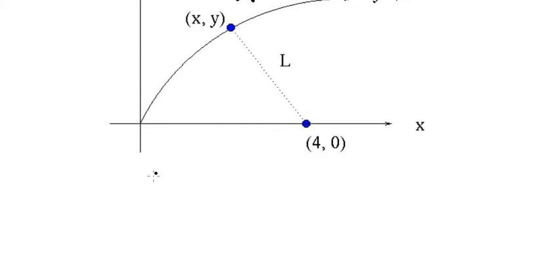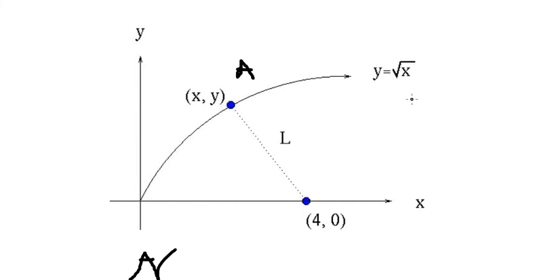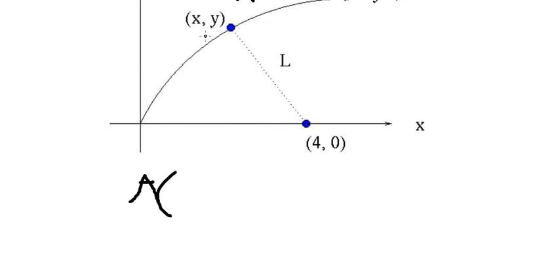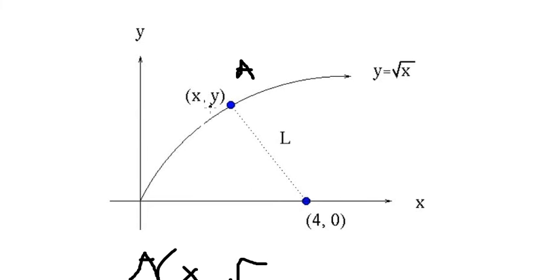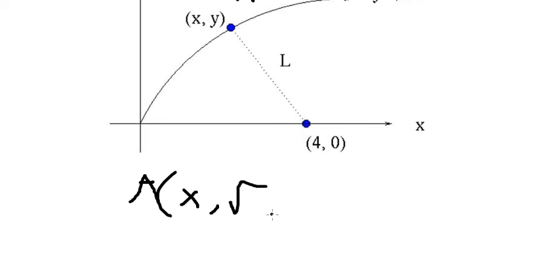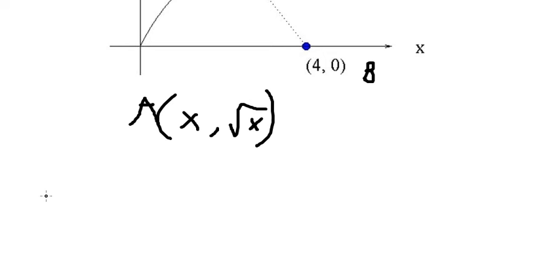We have point A, and we know that y equals the square root of S. So point A should be at (S, √S). We change y to equal the square root of S. I will label this point B. Now we need to create vector AB.